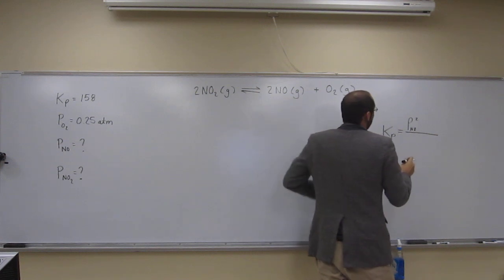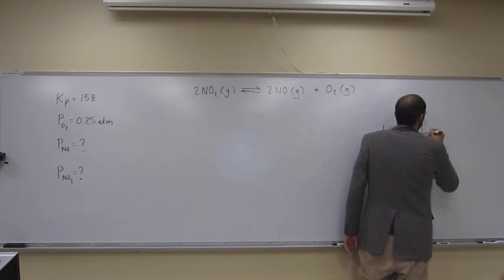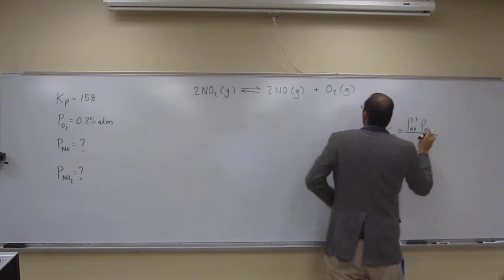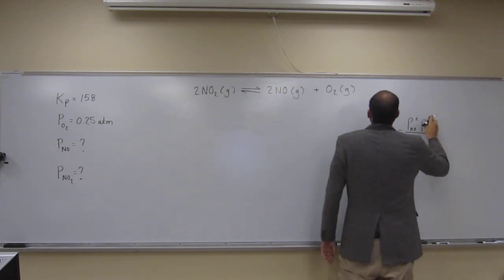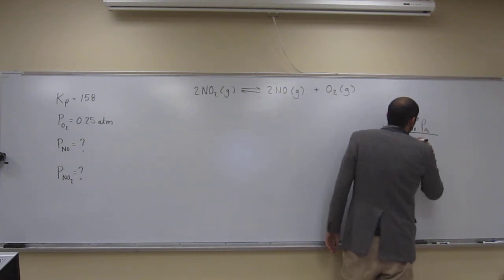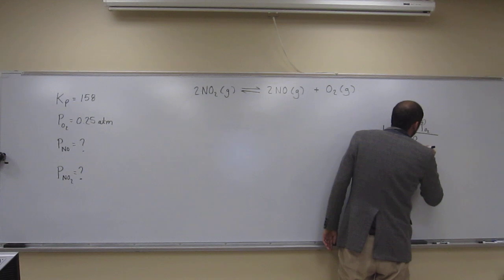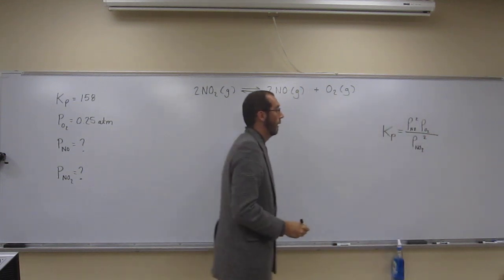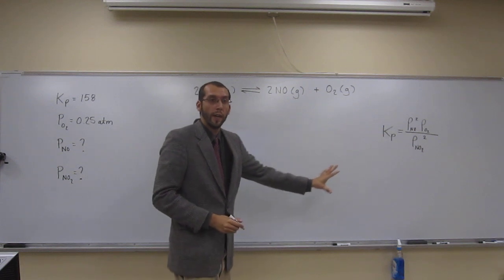So partial pressure of nitrogen monoxide squared times the partial pressure of oxygen gas, no coefficients so we're not going to put a superscript there, divided by the partial pressure of nitrogen dioxide squared like that. So hopefully everybody got to that point.